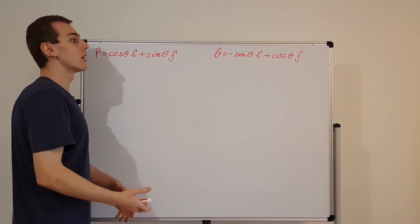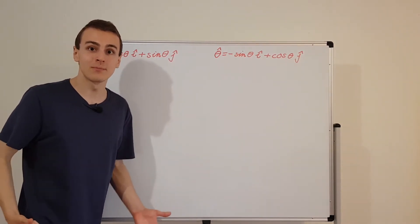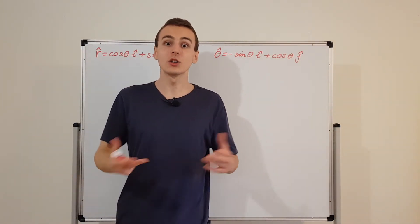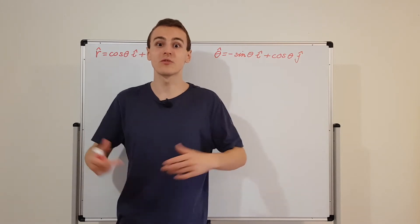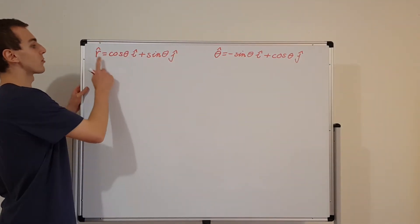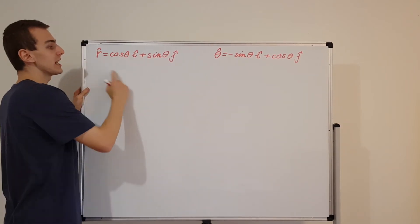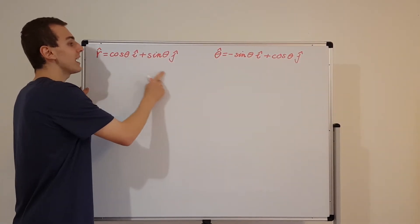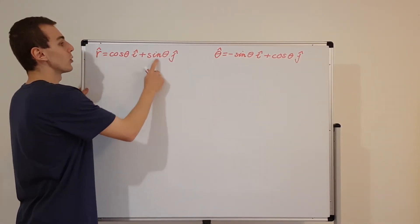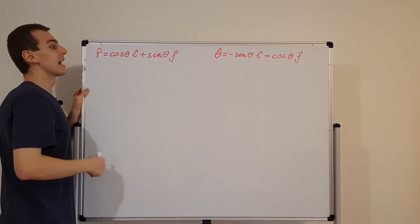r and theta are the coordinates used to describe locations in polar coordinates, and those coordinates can depend on time — exactly the same as x and y in Cartesian coordinates, where x dot and y dot are velocities in the horizontal and vertical directions. There is no explicit t appearing in the equations for r hat and theta hat, but t is implicitly hidden inside because theta actually depends on time.